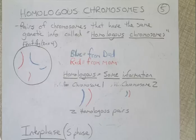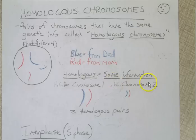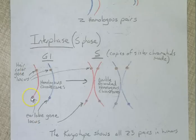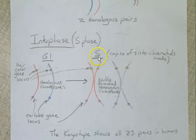Here we have the homologous chromosomes. We have pairs of chromosomes with the same genetic information, called homologous chromosomes. In a fruit fly diploid cell with four chromosomes, blue from dad and red from mom, homologous means the same information. For chromosome number one and chromosome number two, we have two homologous pairs, both carrying the same genetic information. During G1 of interphase, we only have single-stranded chromosomes. Here we have the locus — the gene for hair color — and we get two copies of that. We might also have a gene for something else on a different part of that chromosome, such as the earlobe gene in humans, whether it's free or attached. Then during the S phase of interphase, we make copies of these chromosomes; they're still attached to each other and won't separate until anaphase.